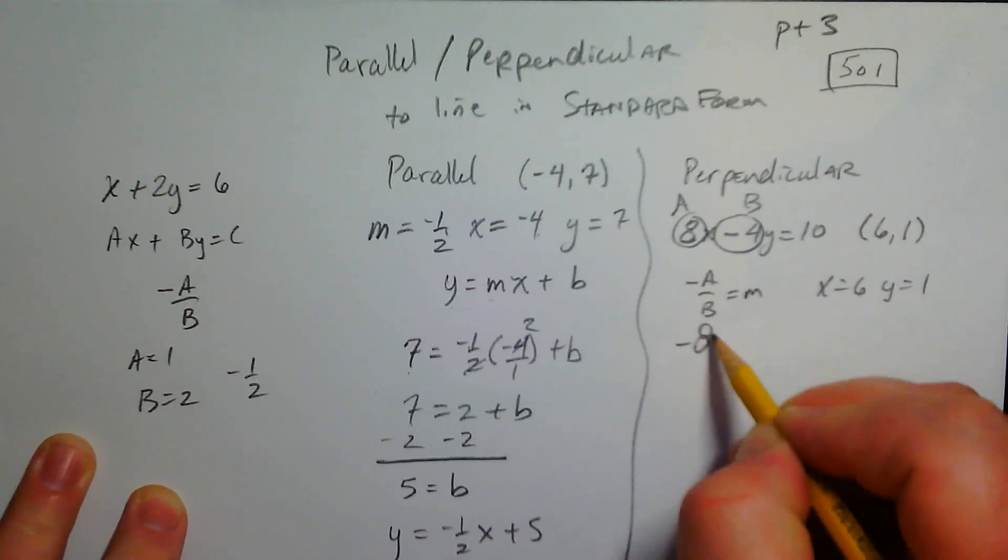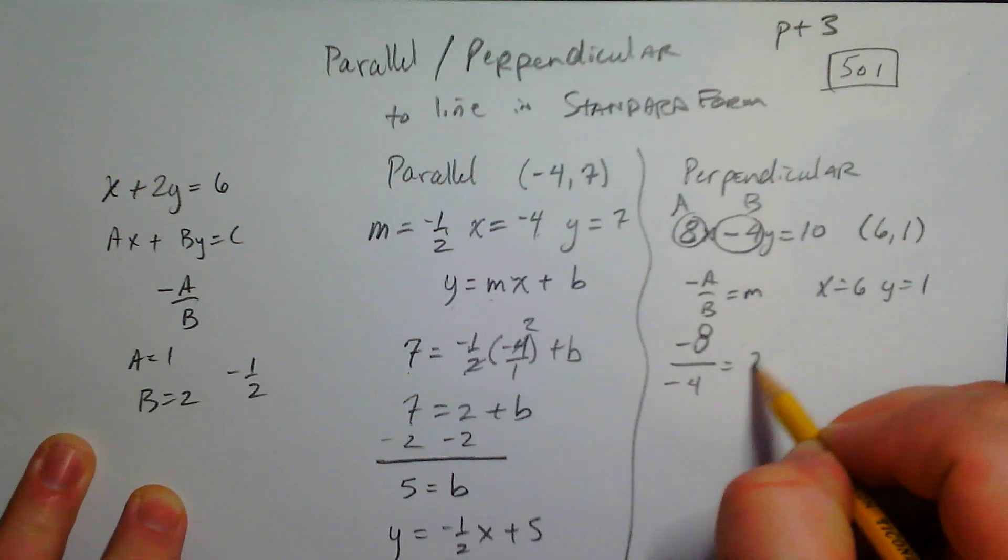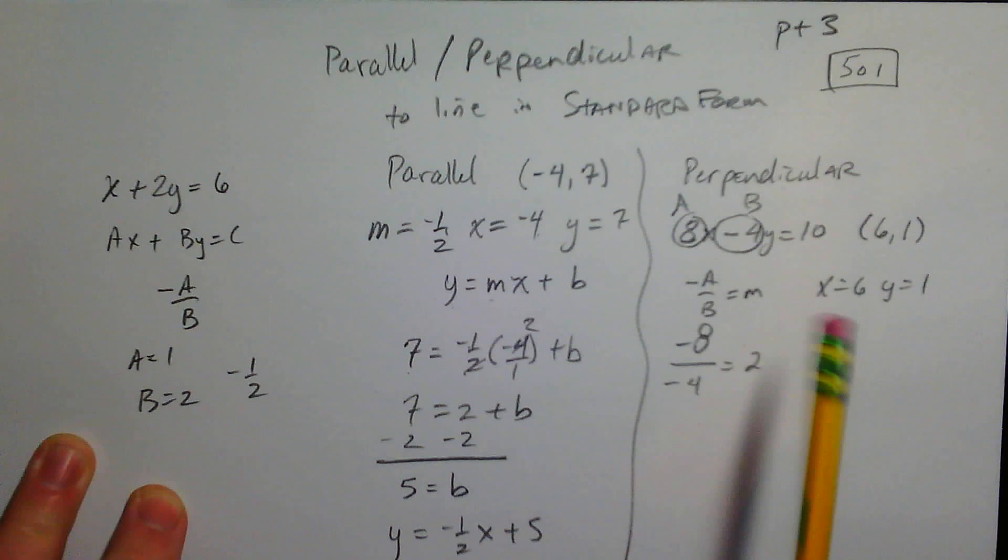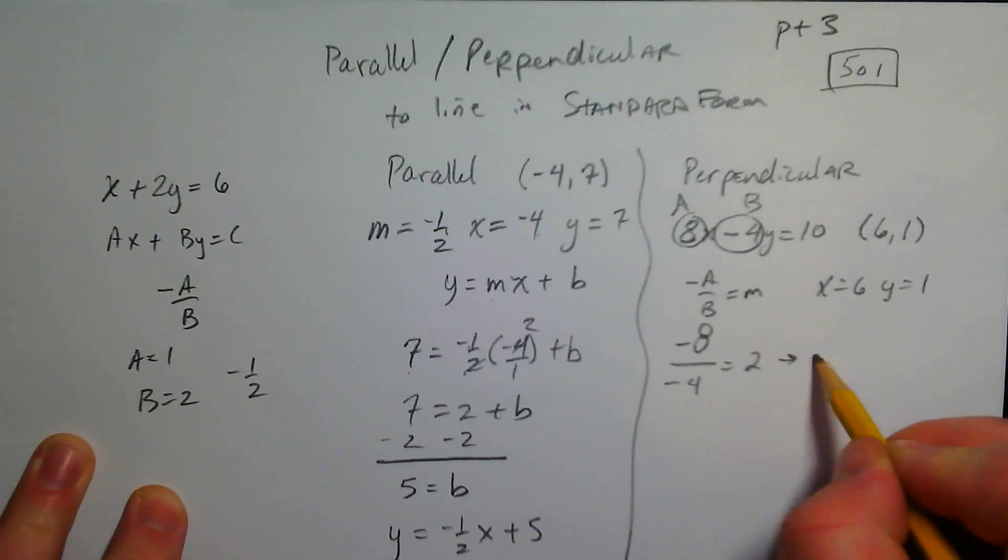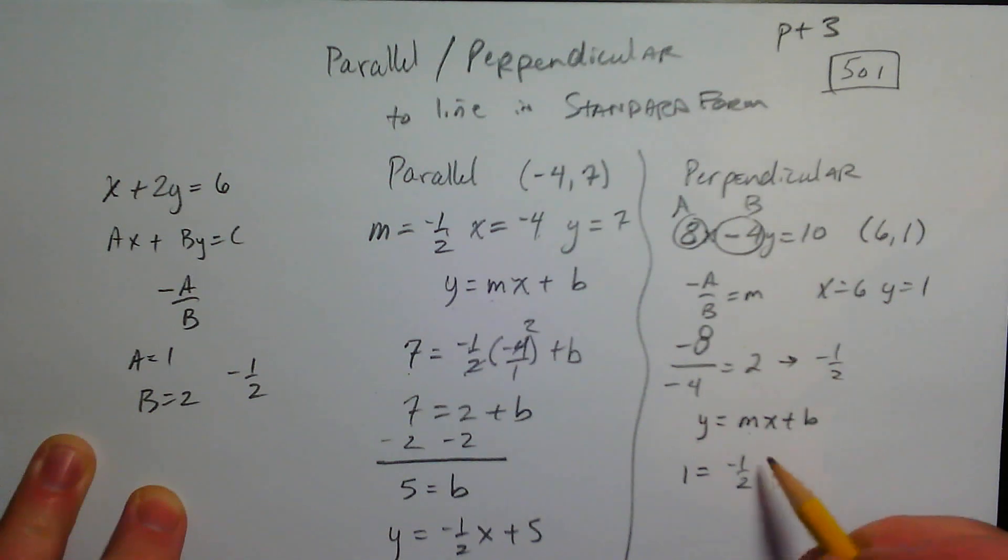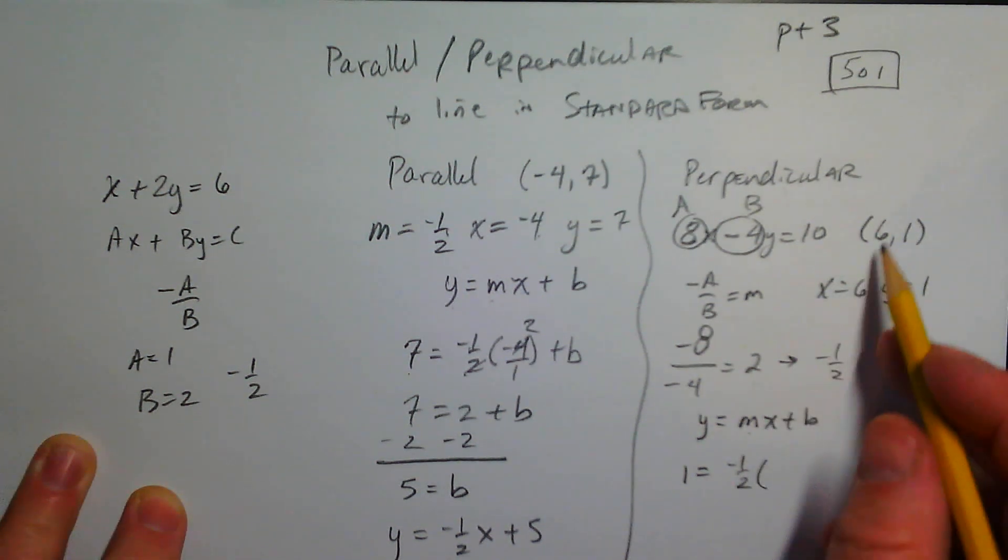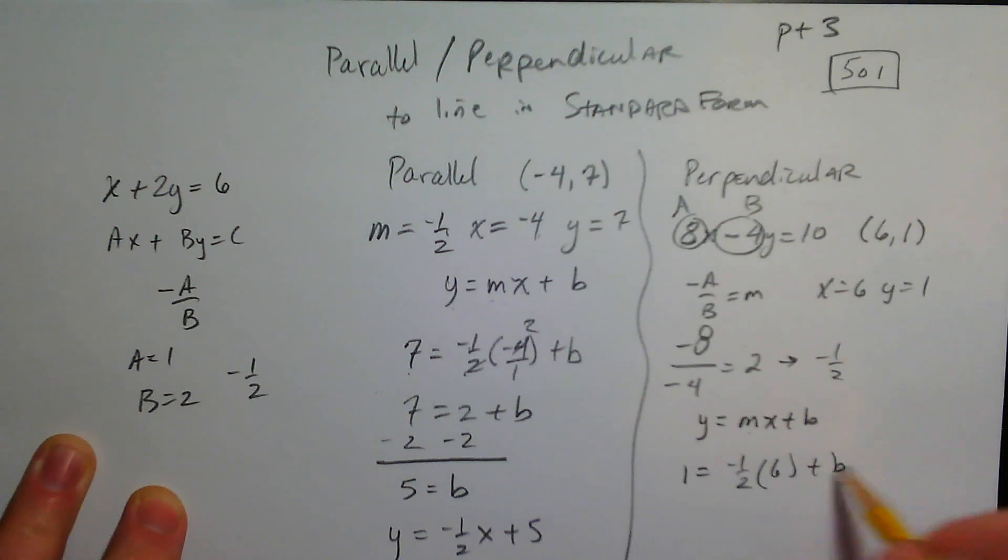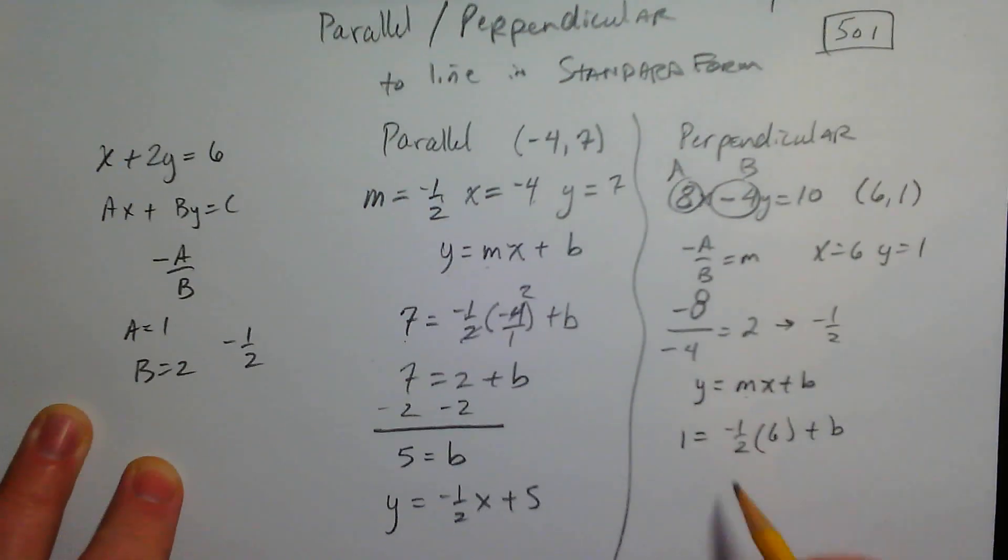So negative 8 divided by negative 4. Well that's 2. So we need perpendicular to that. So our slope is going to be negative one-half. So start with your formula. Plug everything in. 1. Negative one-half. x is 6 plus b. It's kind of funny, it turned out to be negative one-half. But anyway.